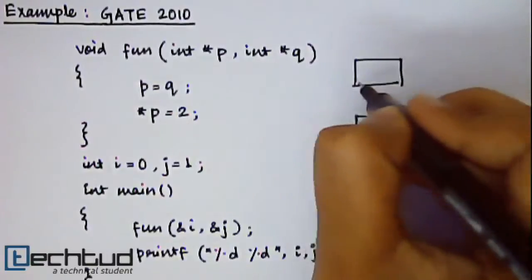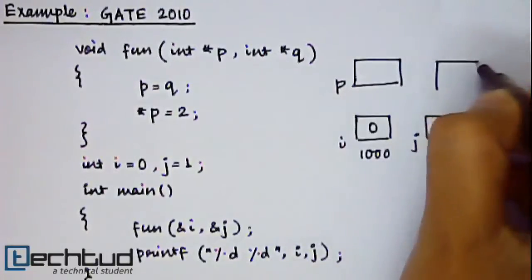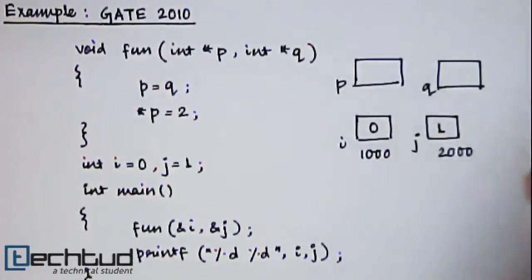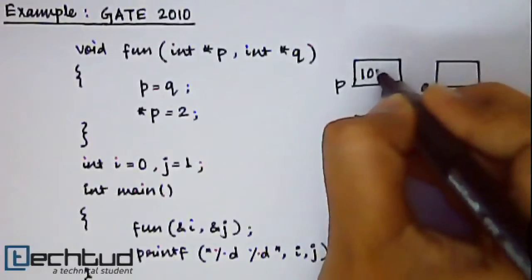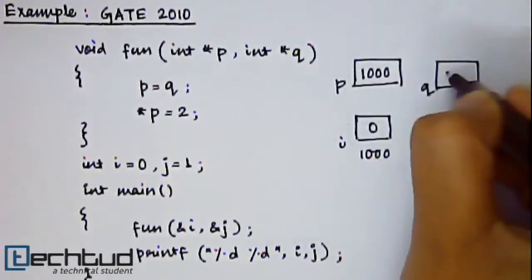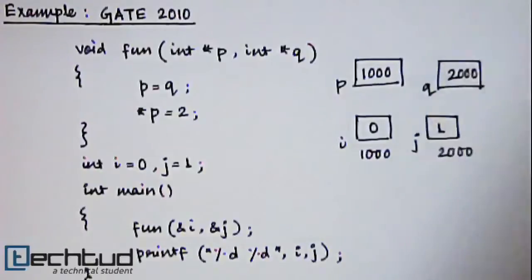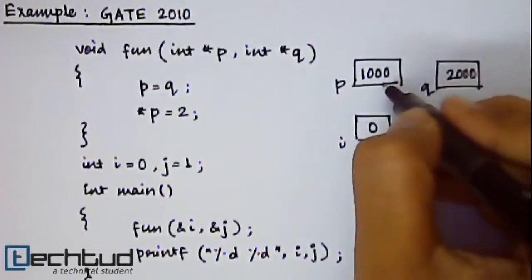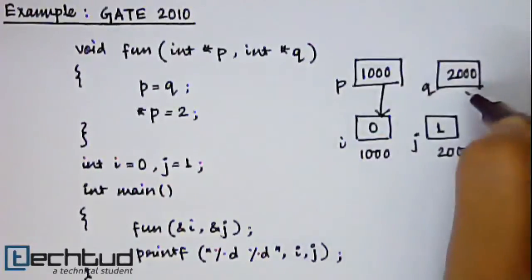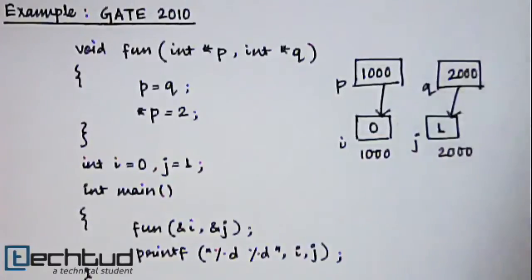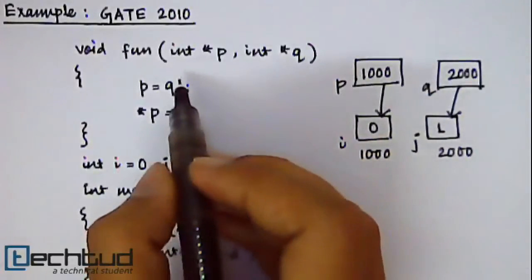So in fun function, you are taking the address of i inside the pointer p and address of q inside pointer q. So here it is pointer p, pointer q. It is storing the address of i, it is storing the address of j.